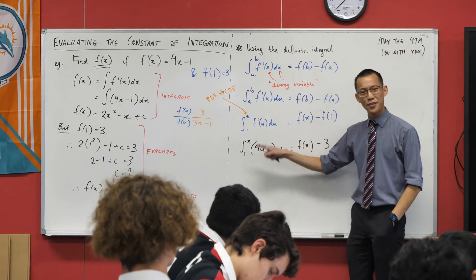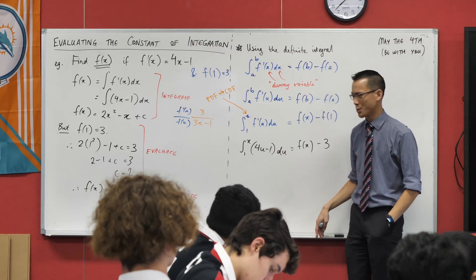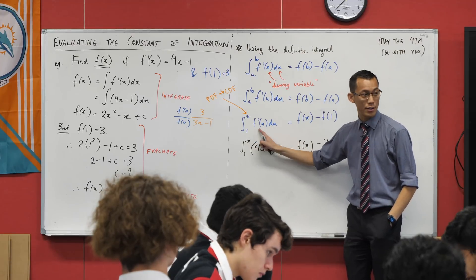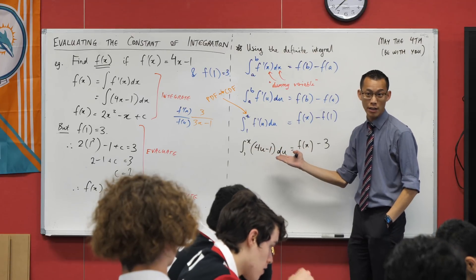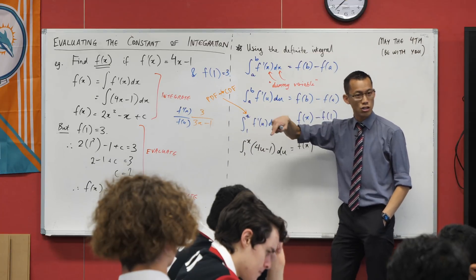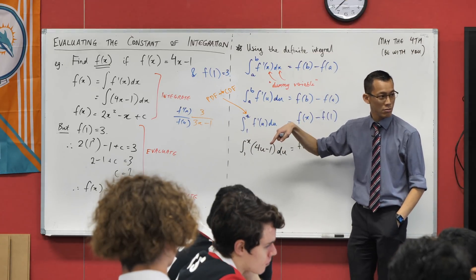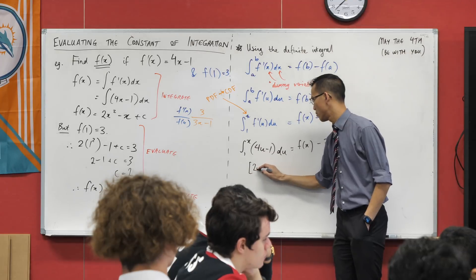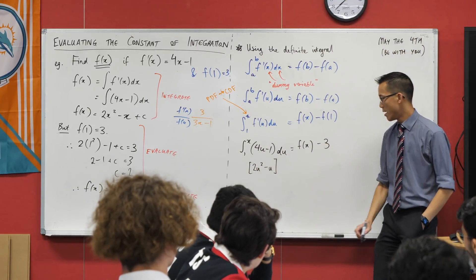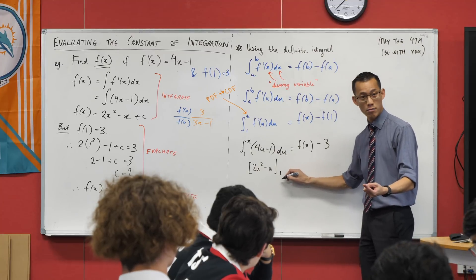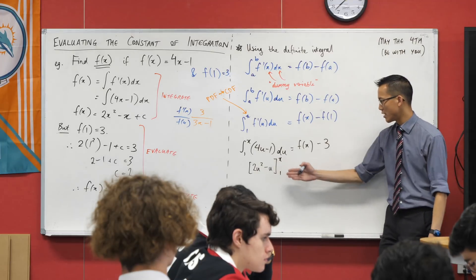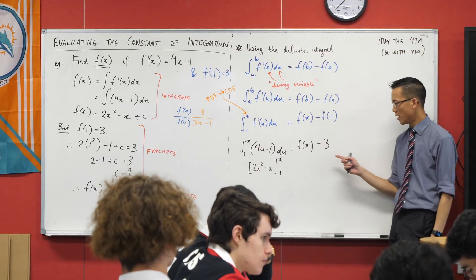I've got a definite integral here. I know how to do definite integrals. I'm going to integrate this and I'm going to substitute in each of the boundaries. Now lucky for you, we actually have already integrated this. It's going to be 2u squared minus u. So let's go ahead: 2u squared minus u. I've integrated it, and what I'm going to put in is 1 and x. Now just because that's so easy, I'm also going to tidy up a little bit over here.